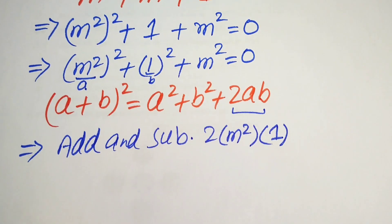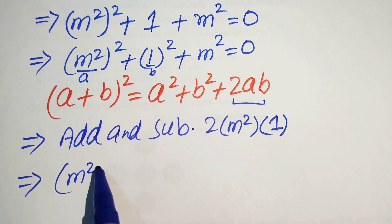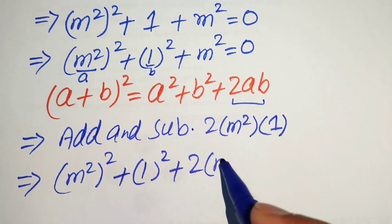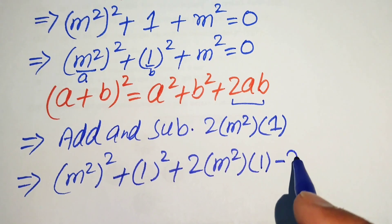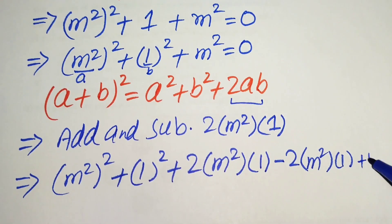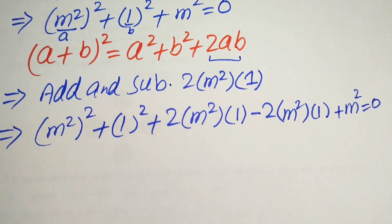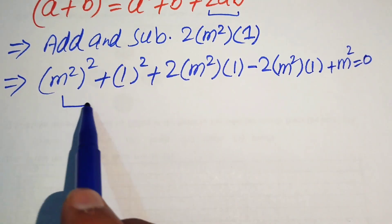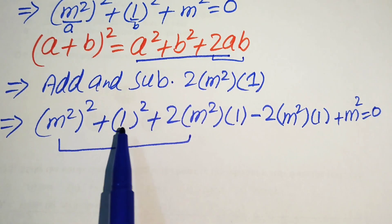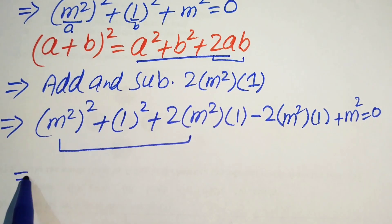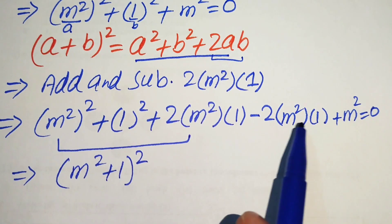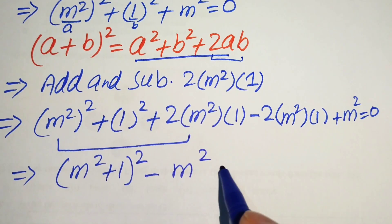Adding and subtracting that term, the equation becomes: m squared whole square plus 1 squared plus 2 times m squared times 1, minus 2 times m squared times 1, plus m squared, all equals 0. Focusing on the first three terms, we recognize a squared plus b squared plus 2ab, which combines to give m squared plus 1 whole square. The remaining terms, minus 2m squared plus m squared, become minus m squared, so we have m squared plus 1 whole square minus m squared equals 0.